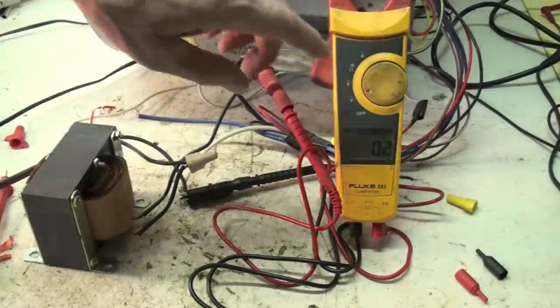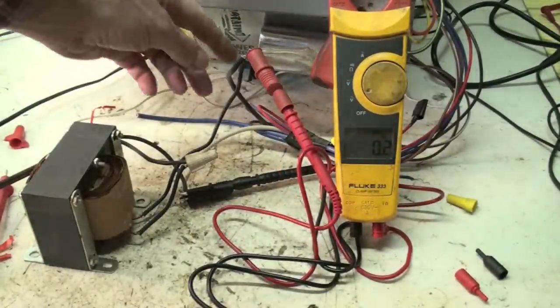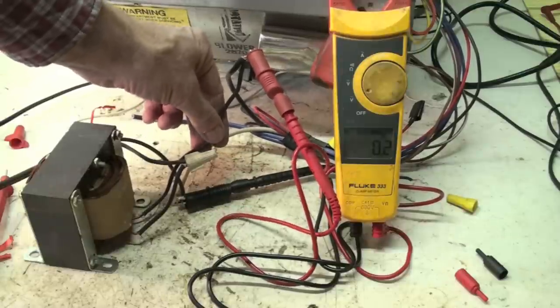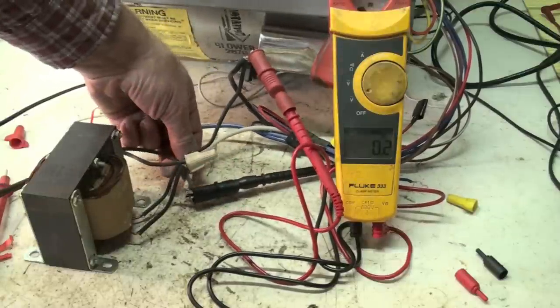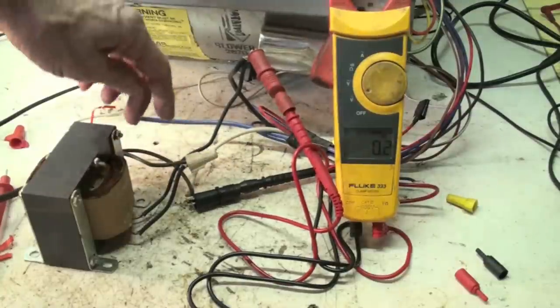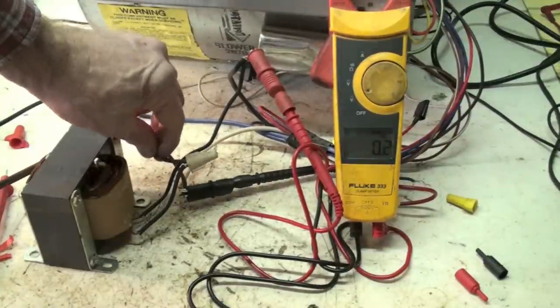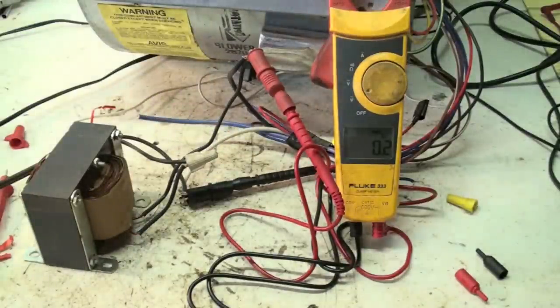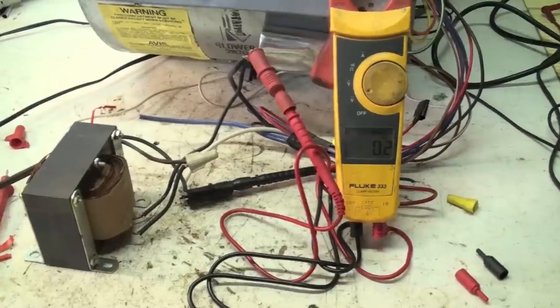I've got the voltmeter hooked up here. This is the lead coming out of the choke coil and I've got another lead hooked to the white. So power coming in is here, coming out of the choke coil is here. Let's see what the voltage is when we start this motor up.